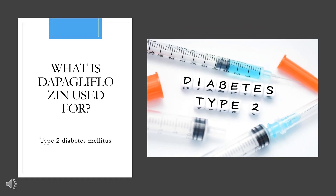Dapagliflozin is indicated as an adjunct treatment to improve glycemic control in adult patients with type 2 diabetes mellitus, along with diet and exercise. It is also indicated to reduce the risk of cardiovascular death, hospitalization for heart failure, and urgent heart failure visit in adults with heart failure, or to reduce the risk of hospitalization for heart failure in adults with type 2 diabetes mellitus and either established cardiovascular disease or multiple cardiovascular risk factors.